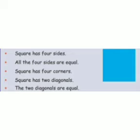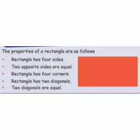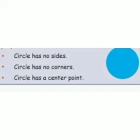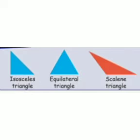Next, properties of rectangle. Rectangle has four sides. Two opposite sides are equal. Rectangle has four corners and it has two diagonals. Two diagonals are equal. Next, circle. Circle has no sides, no corners, and it has a center point.